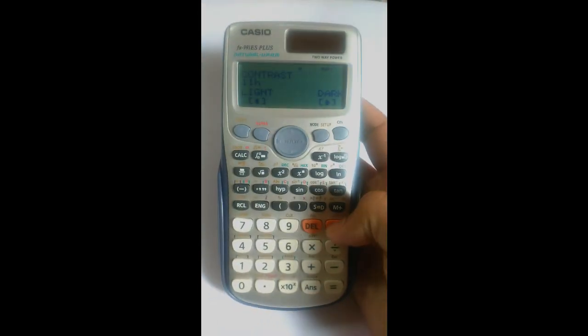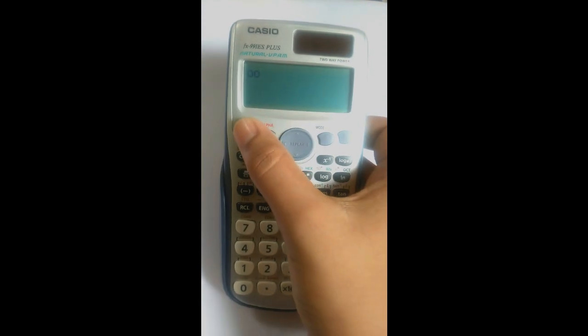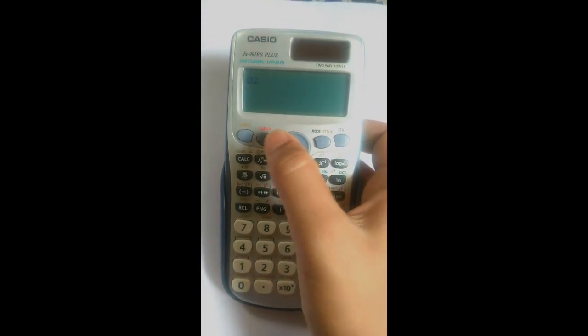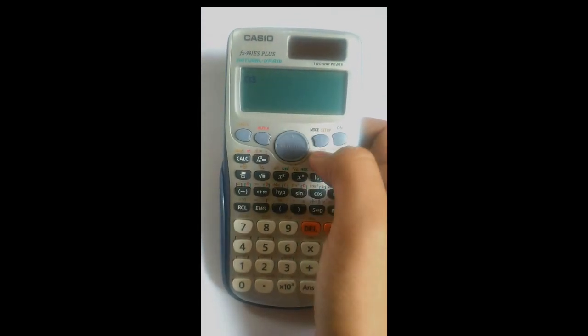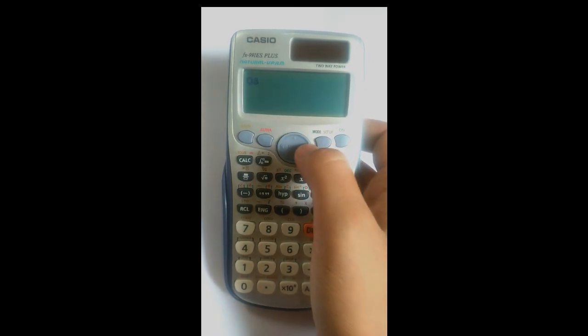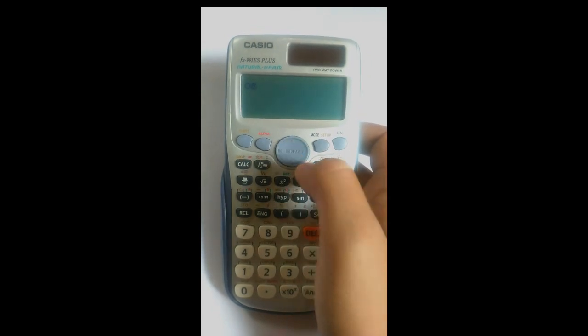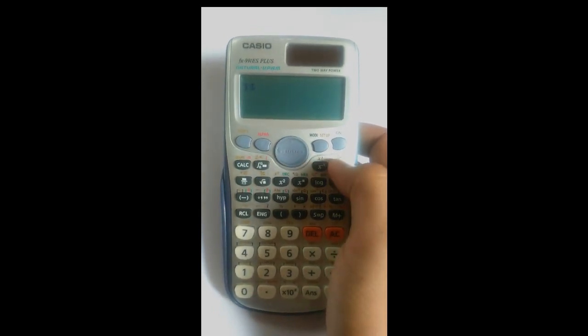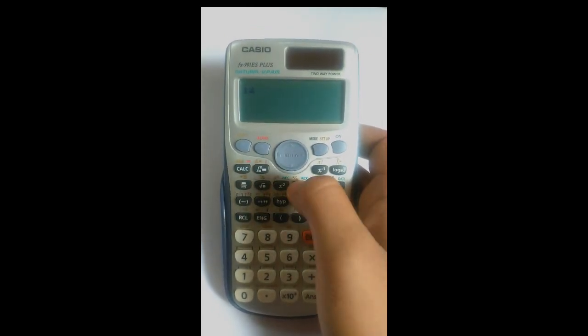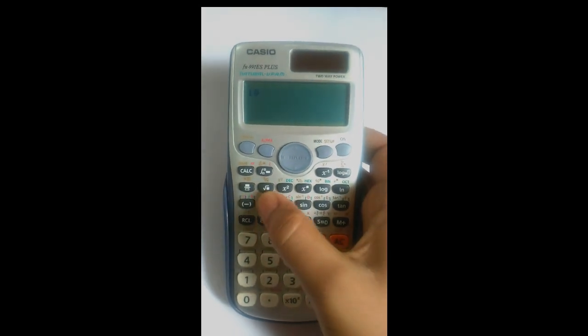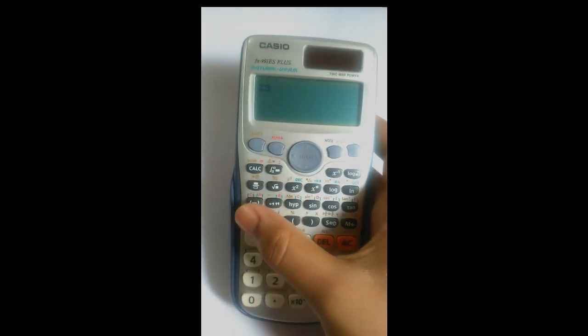Press C again, then Shift, Alpha, up arrow, right arrow, Mode. Then press the button randomly, then ON again.